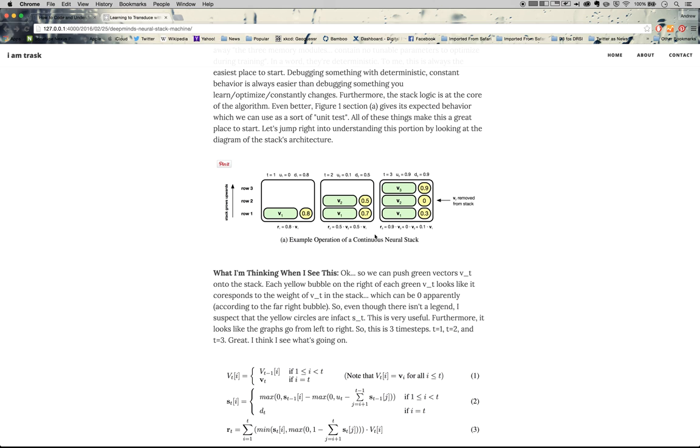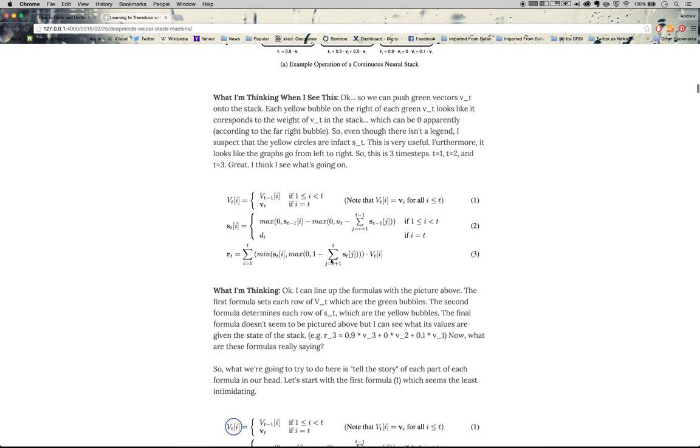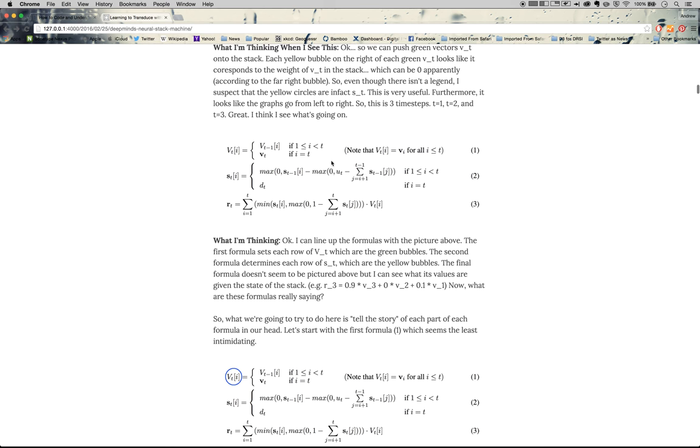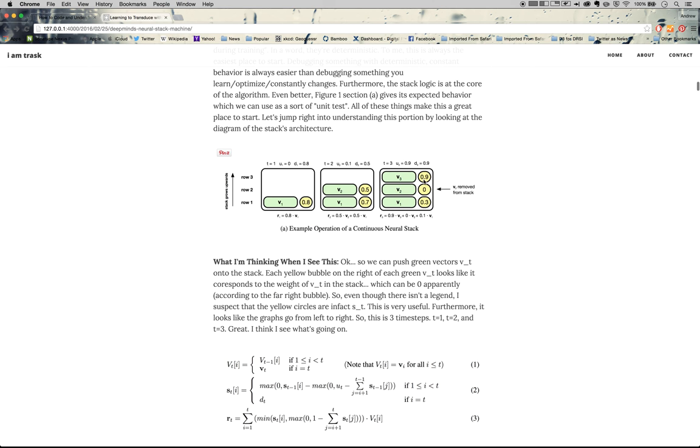So basically this says that we're trying to figure out what vector this is, it's just the same as T minus 1. However, the top vector changes. So the top vector gets added, which is V underscore T. So that's what's going on here. It's basically just saying we always push onto this matrix, and that's actually kind of interesting. So when you think, we're building a neural stack, don't we also want to pop? Why would we force it to always push? In this case, we are always pushing.